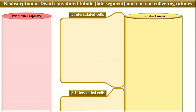The sodium-potassium ATPase pumps are located on the basal side of the intercalated cells, but they are less important here. The main function of intercalated cells is to maintain acid-base balance inside the body. For that, we have carbon dioxide that diffuses from the peritubular capillaries into the alpha intercalated cell. First, we will discuss the alpha intercalated cell in detail.